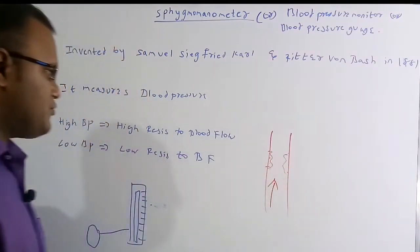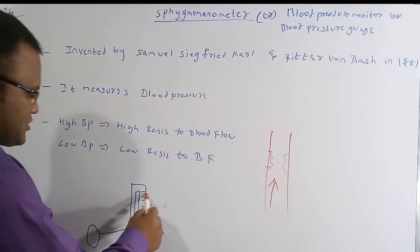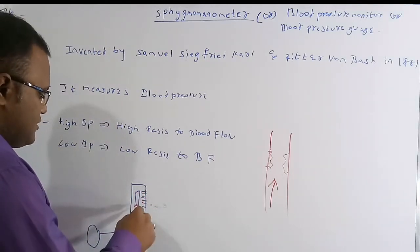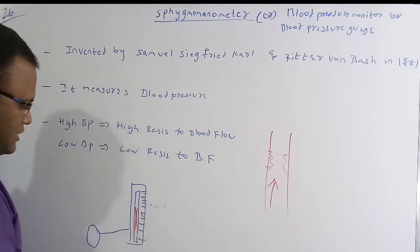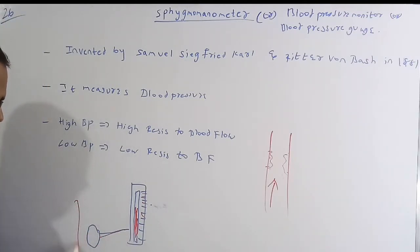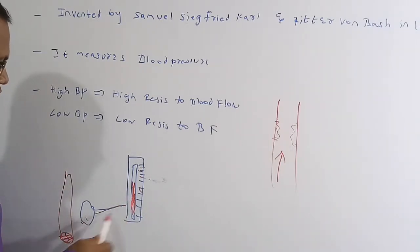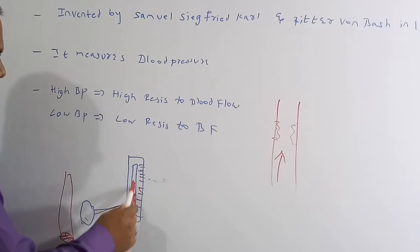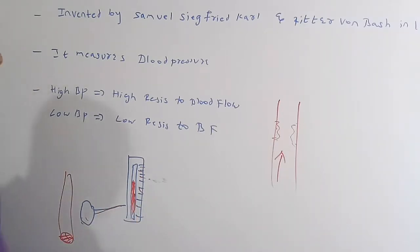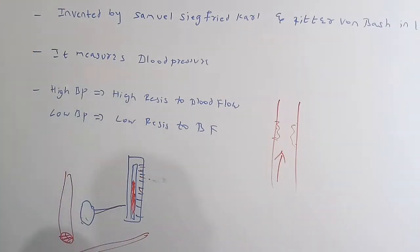The sphygmomanometer instrument has a small scale, a tube containing mercury, and a rubber cuff. The rubber cuff is attached to the human hand. With this instrument, you can measure the amount of blood pressure in the human body. So the answer to the question — which instrument measures arterial pressure — is the sphygmomanometer.